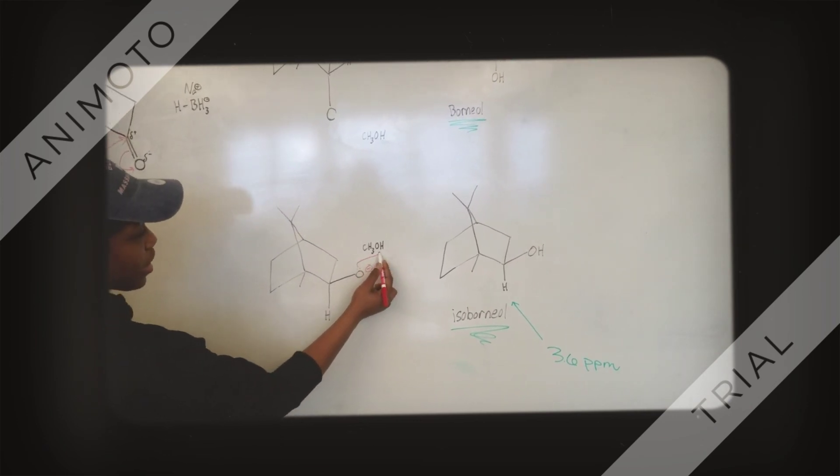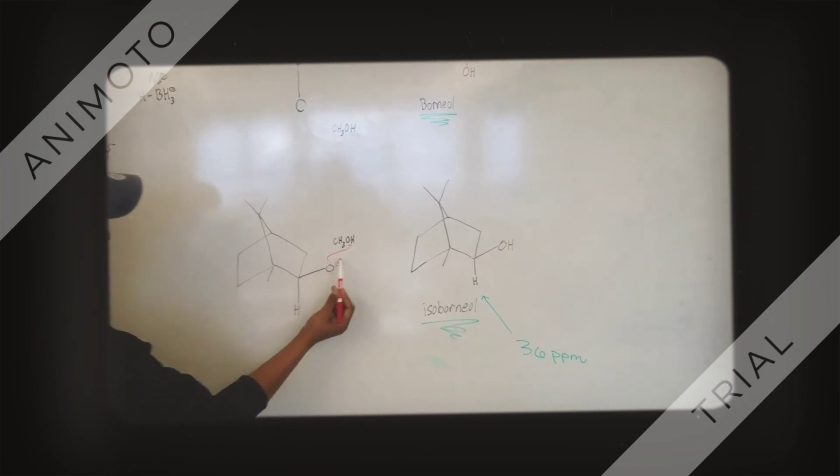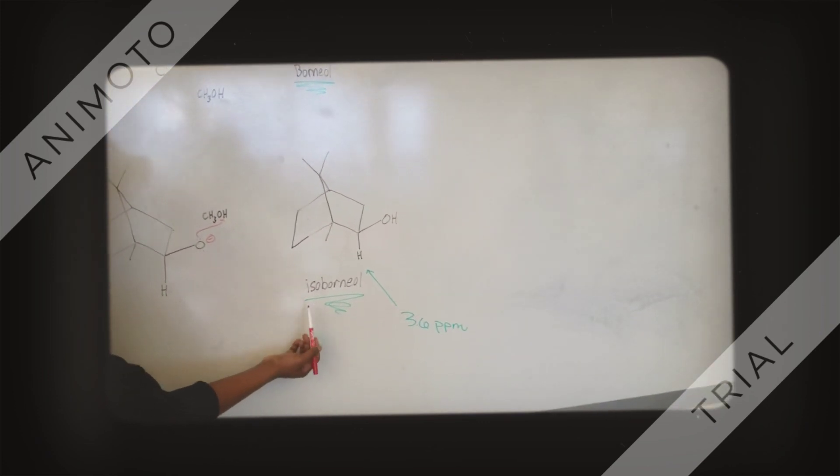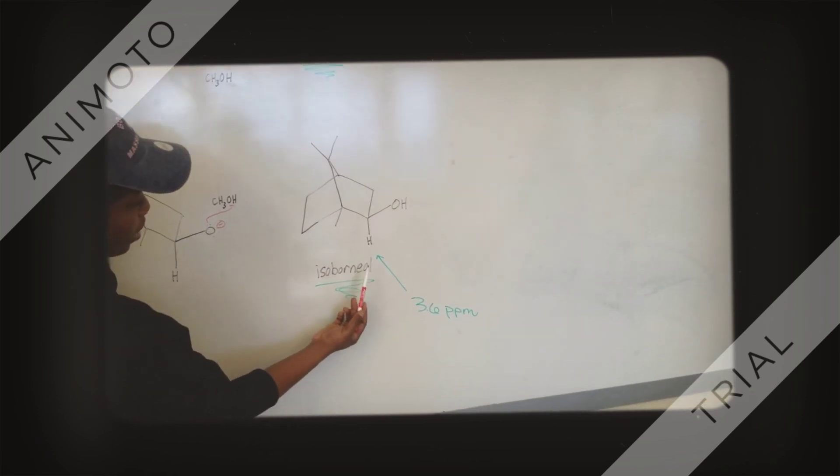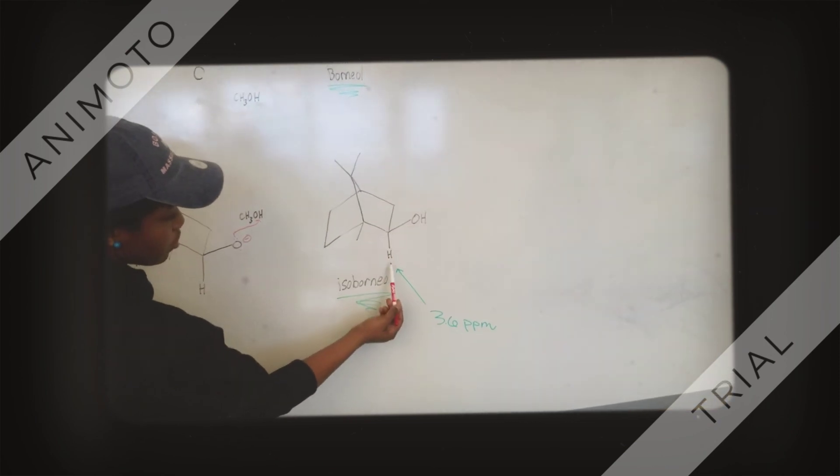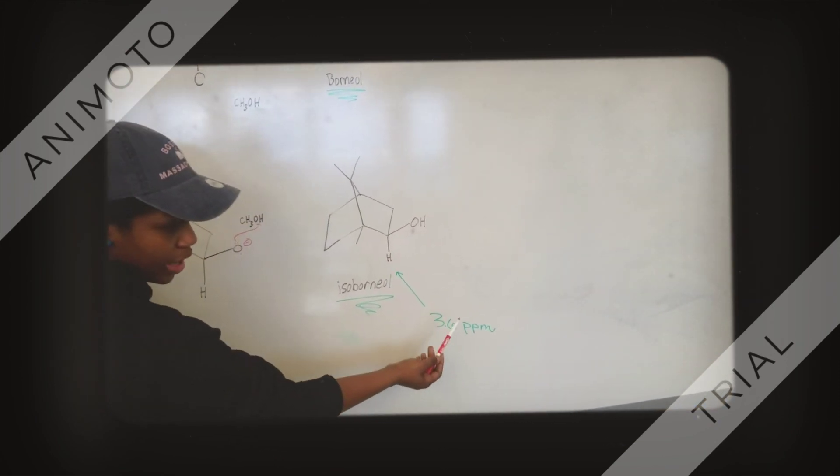One of these lone pairs will attack the hydrogen, causing isoborneol to be formed. When isoborneol is formed, this hydrogen shows up at 3.6 ppm on the NMR.